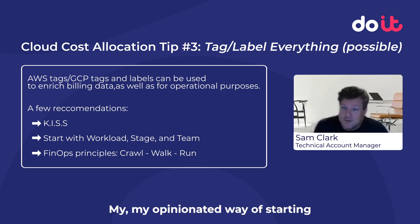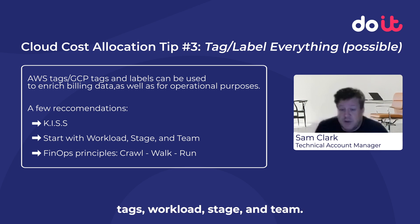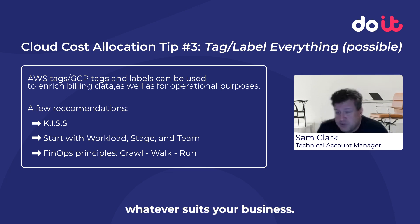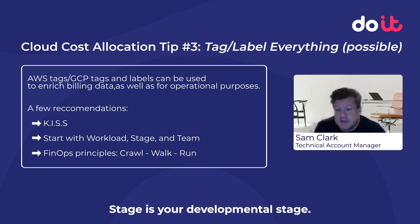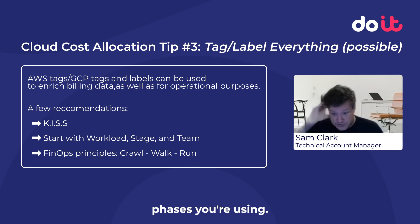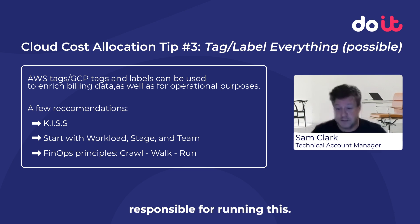My opinionated way of starting this off is to use just three tags: workload, stage, and team. Workload could be swapped out for application name, whatever suits your business — let's say 'web front end,' something like that. Stage is your developmental stage, so dev, test, prod, or whichever phases you're using. And team is who's responsible for running this.